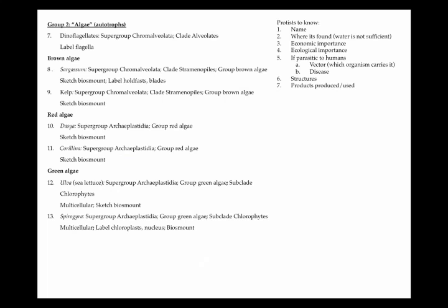Those are all the protists that are either mixotrophic or heterotrophic — meaning they must get their carbon from an outside source. Next we'll talk about algae, which is the name for autotrophic or photosynthetic protists. A new segment will start there in case you only wanted to listen to one section.